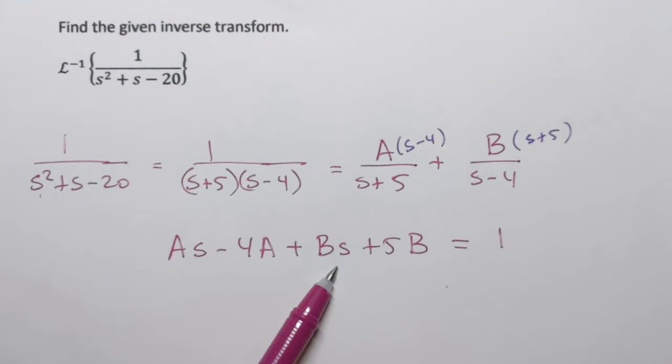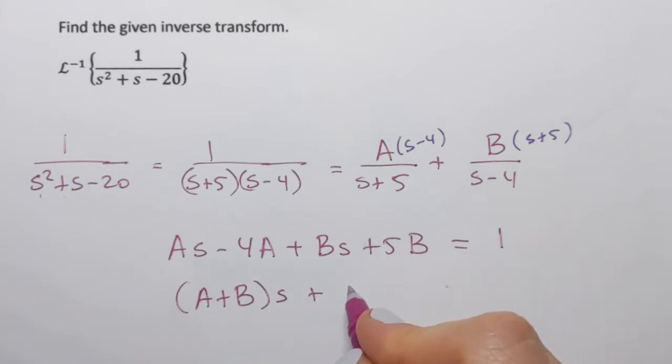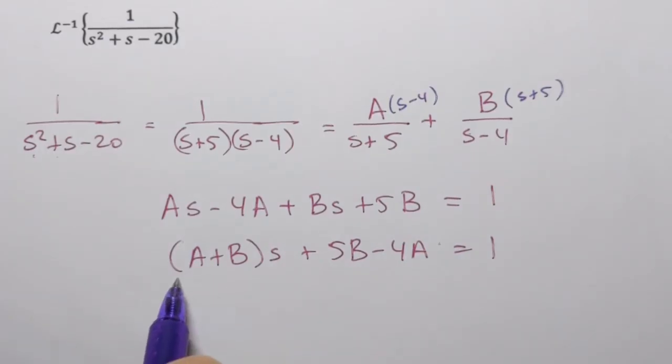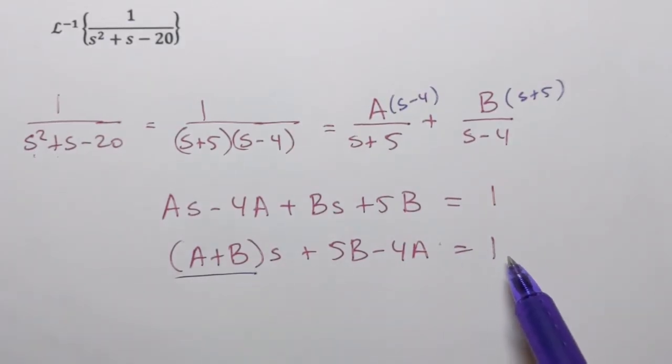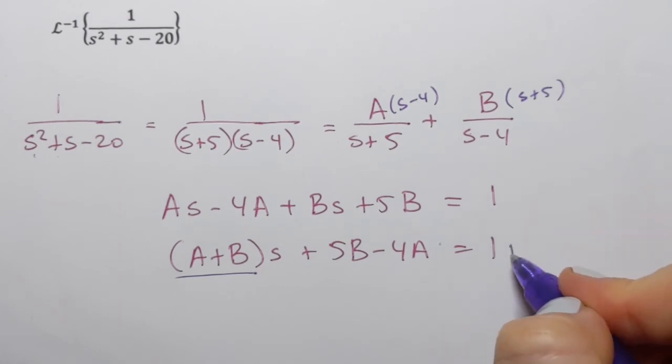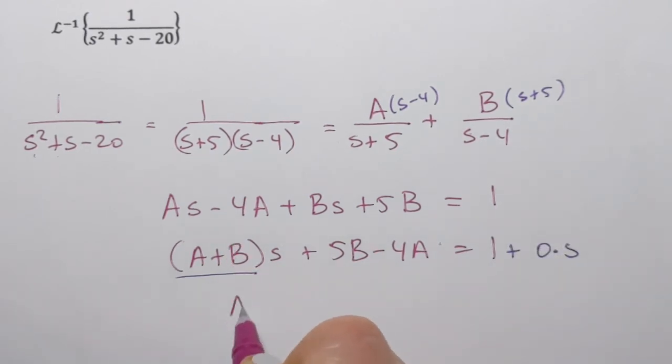Now if I group terms, I'll have a plus b times s plus 5b minus 4a equals 1. On the left-hand side, the coefficient of s is a plus b. I don't have s on the right-hand side, so it's like plus 0 times s. So that means that a plus b has to be equal to 0.